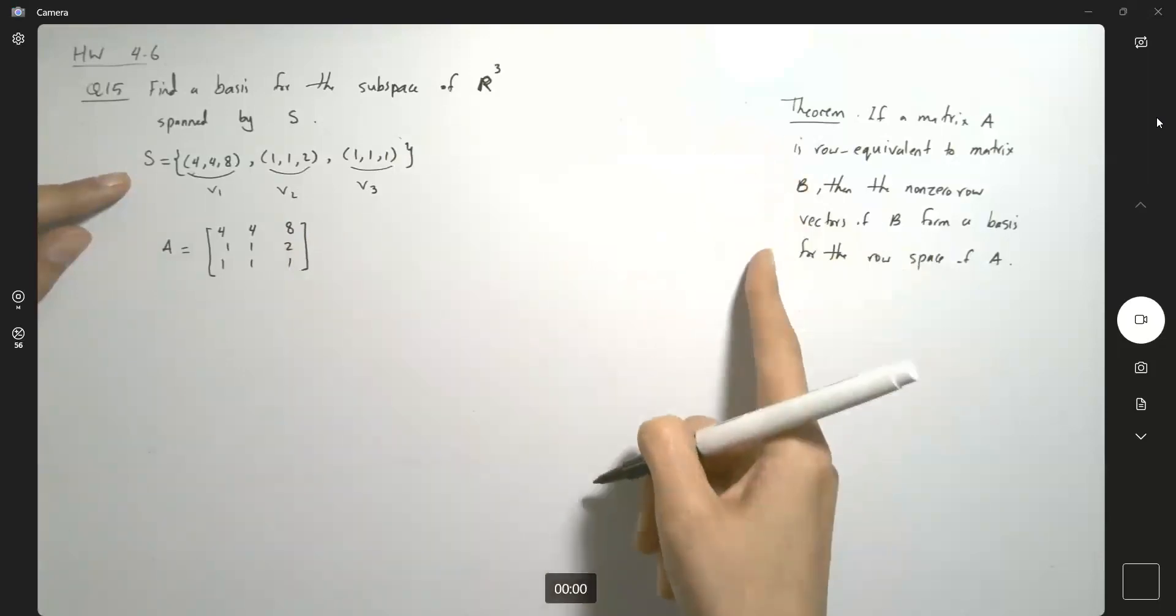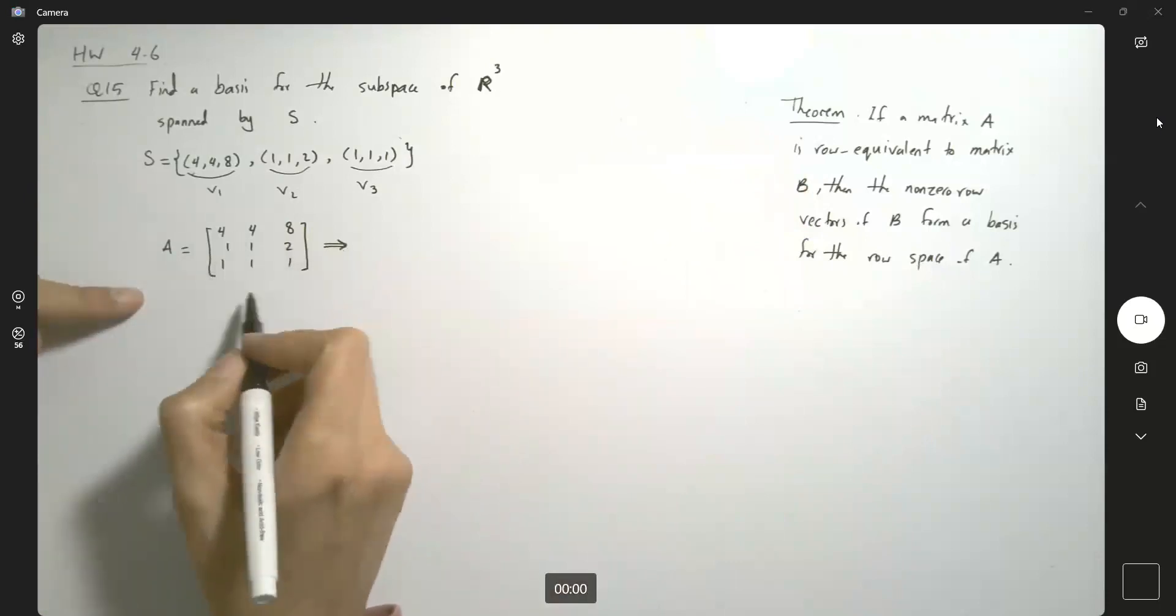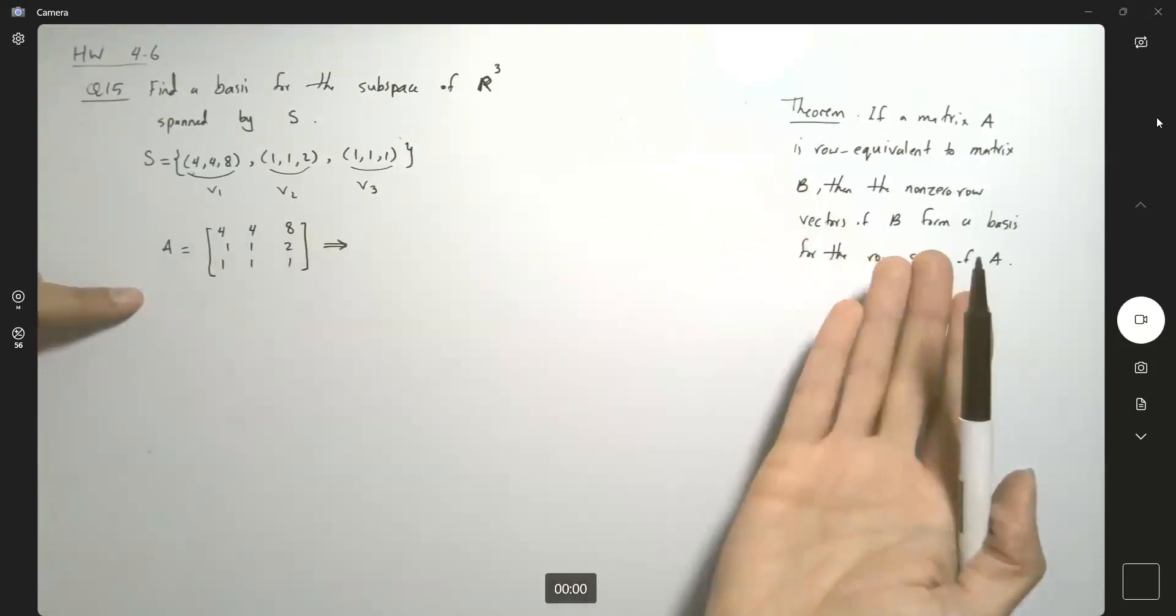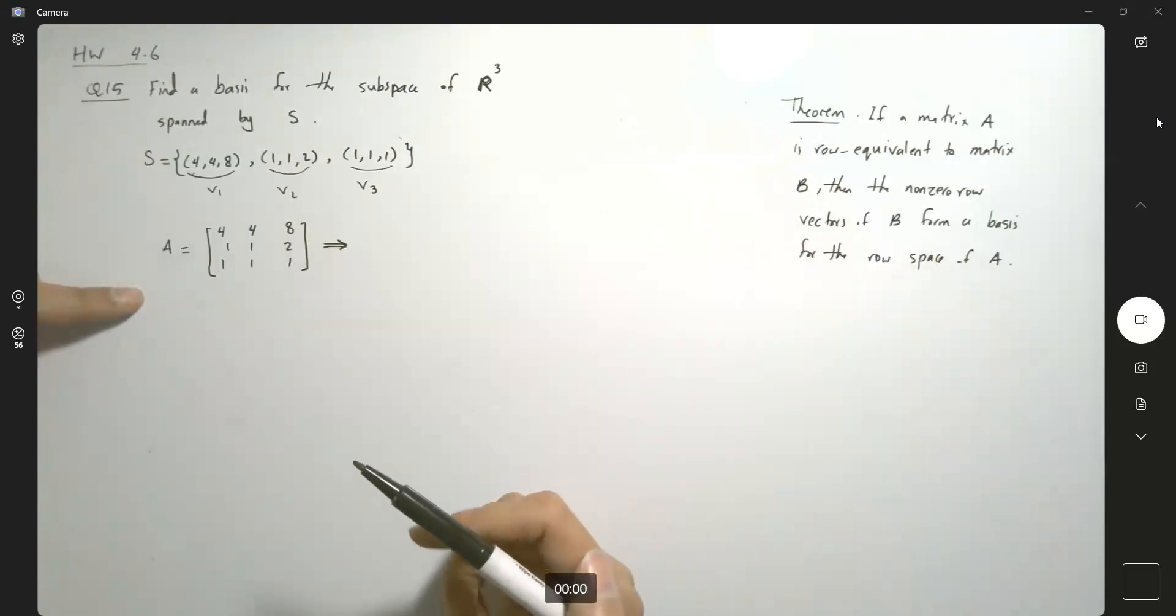Going back to the theorem, find a row equivalent matrix and basically find the number of non-zero vectors.